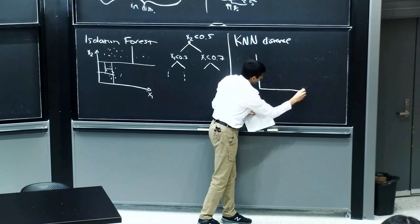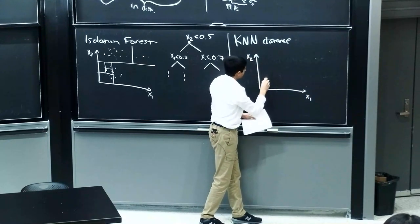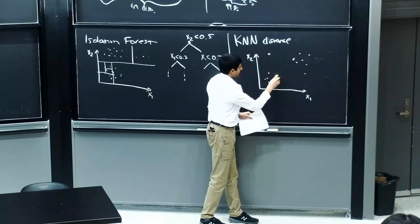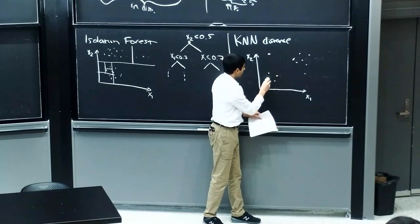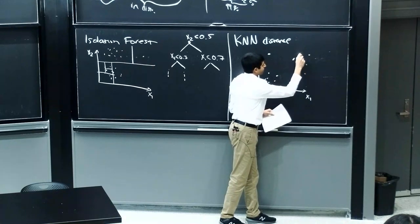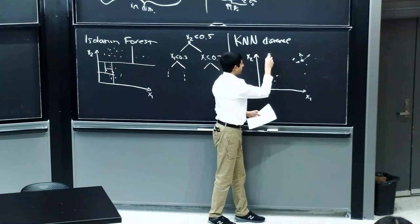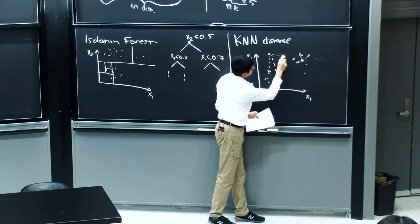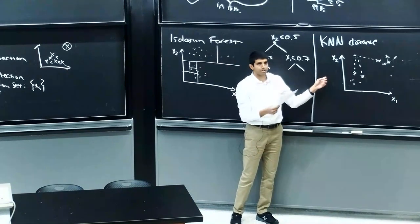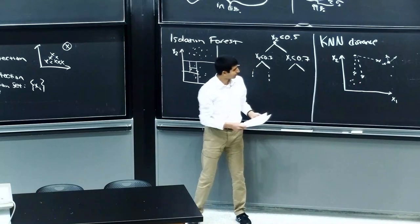Another method is KNN distance. You choose a distance metric and a value for k, then score each data point by computing the average distance to its k nearest neighbors. Points in dense clusters have small mean distances; outlier points far from everything else have large mean distances. You then choose a threshold on this score to flag outliers.